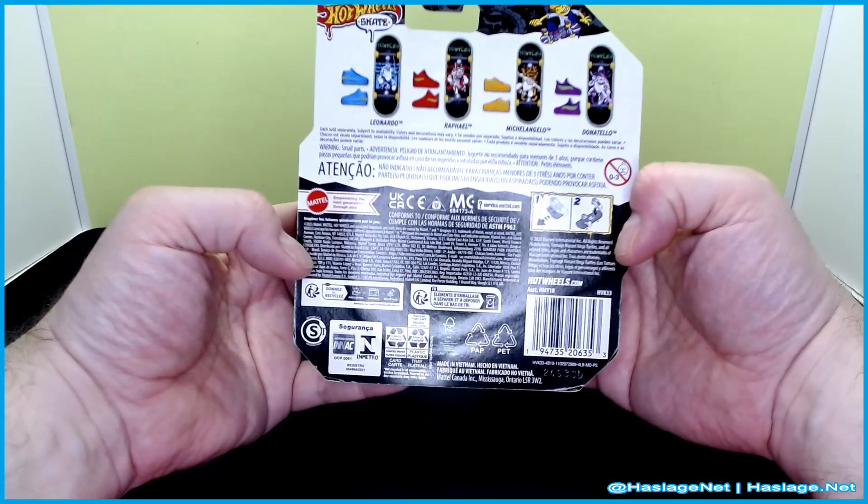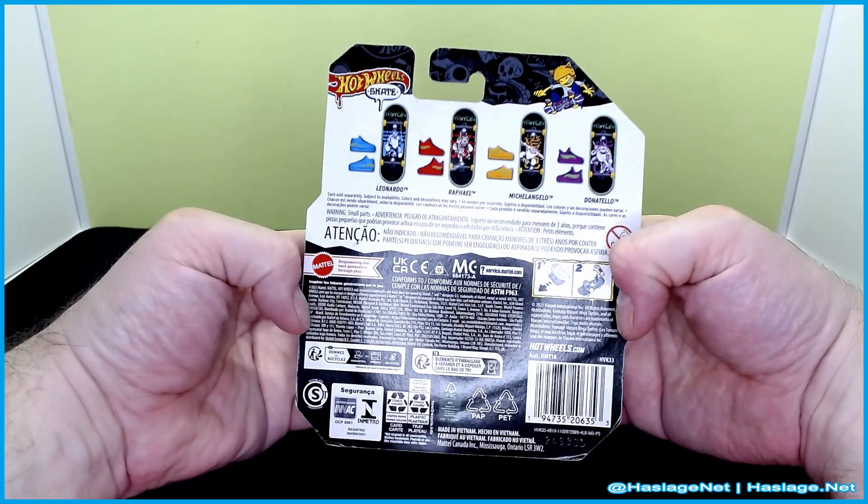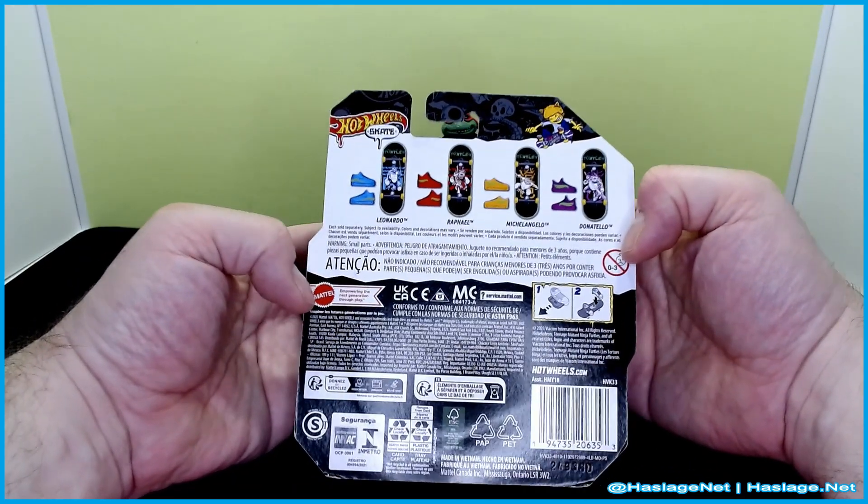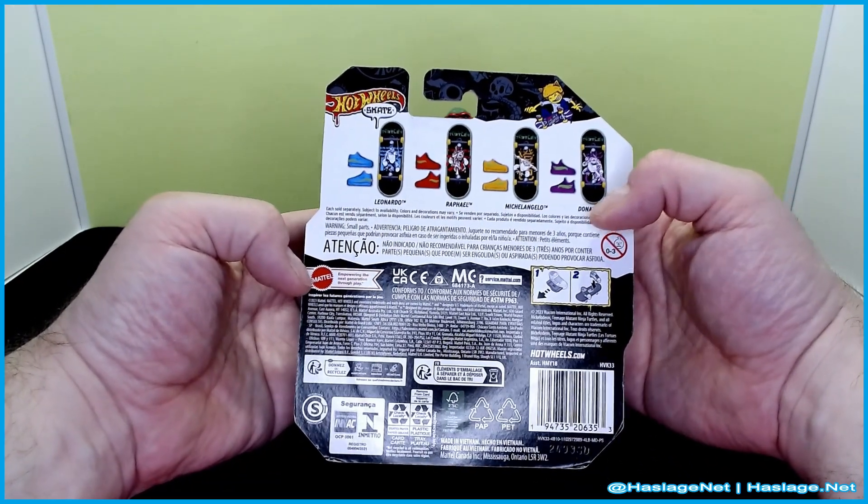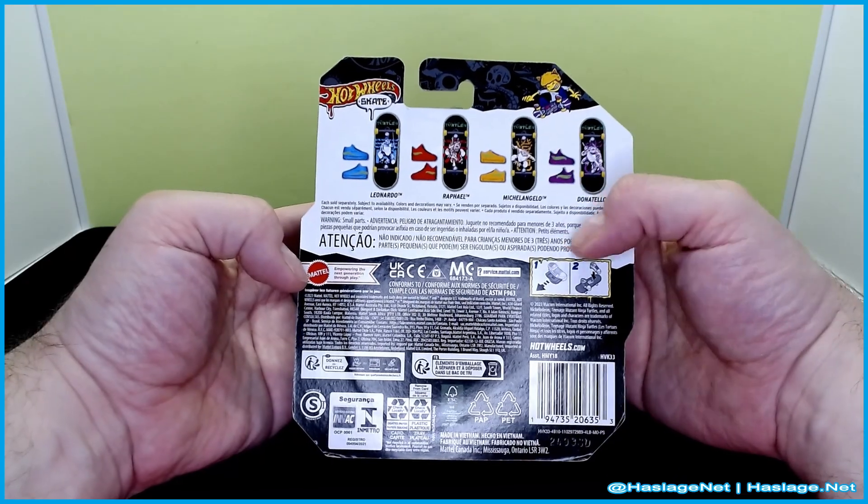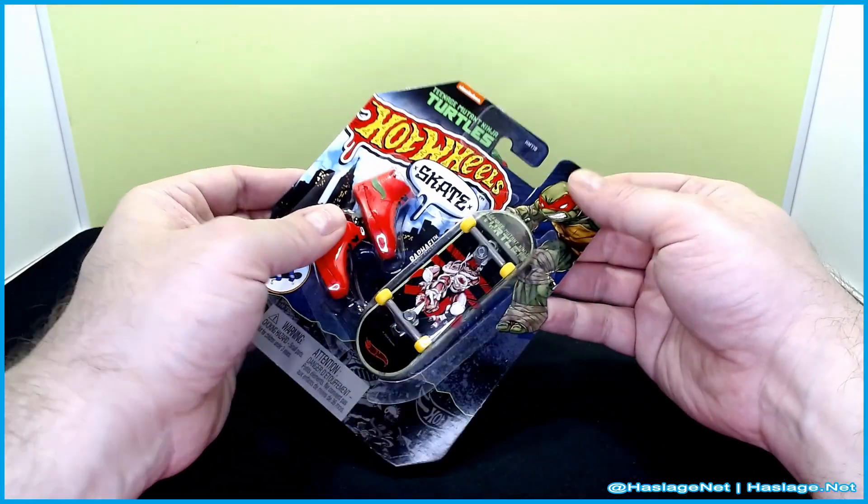Here's the back of the box. It shows all four turtles. Raph being my guy, he's the only one I picked up so I'm not really interested in the other four. Also I think the other three are ugly.